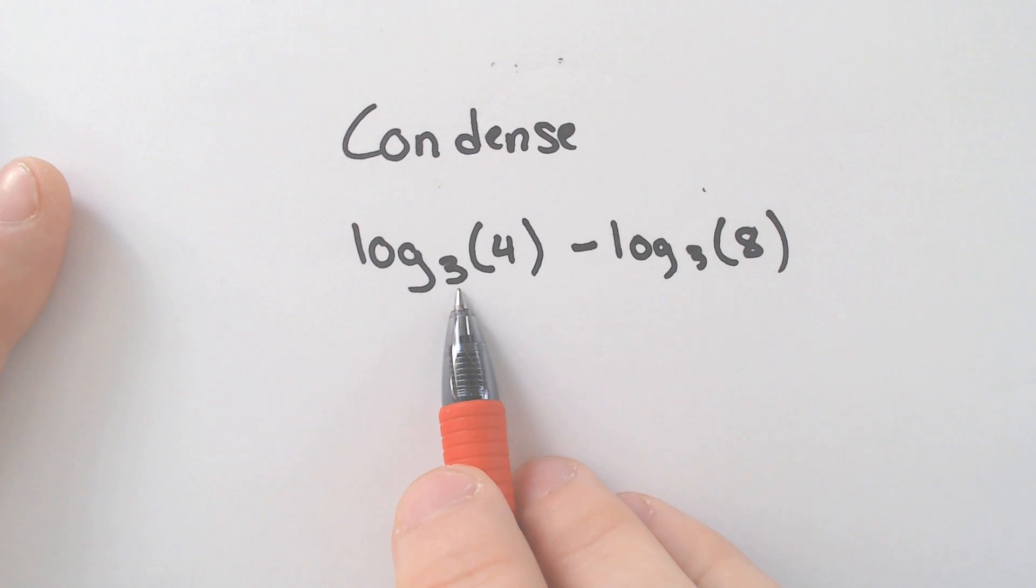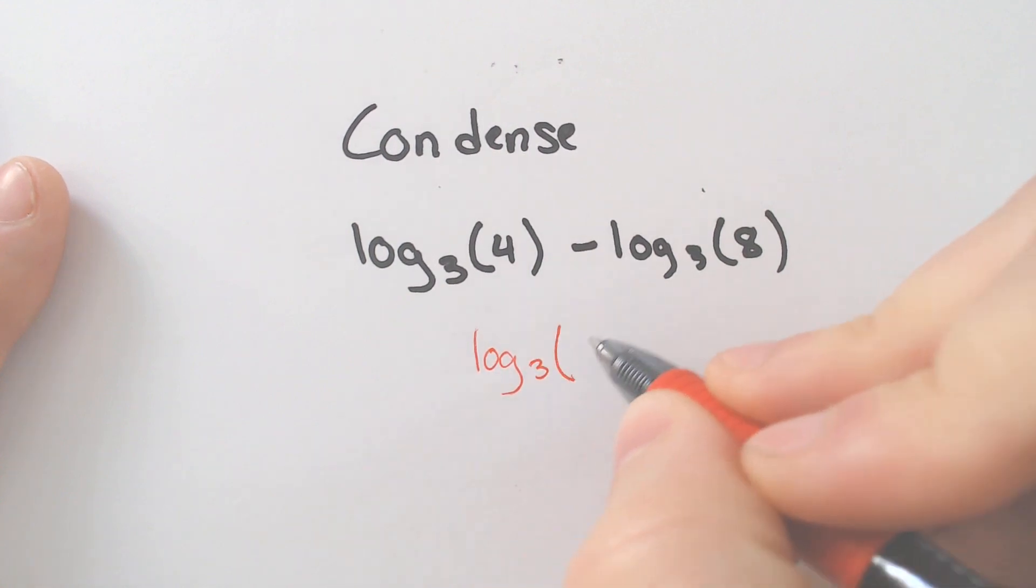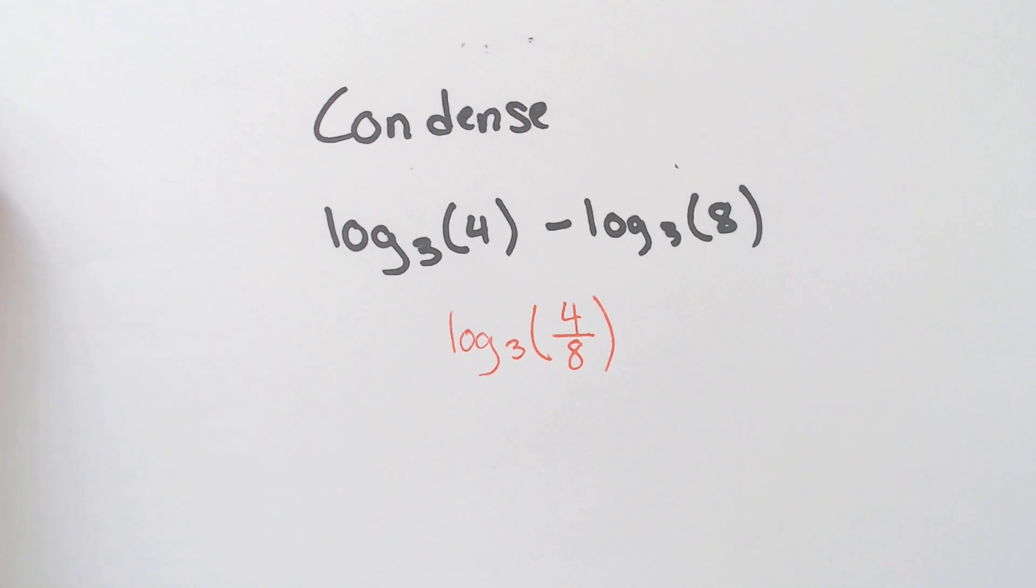So we got log base 3 of 4 minus log base 3 of 8. Both of them are log base 3. We are going to condense them into one log, and we're going to have 4 divided by 8 rather than 4 multiplied by 8.